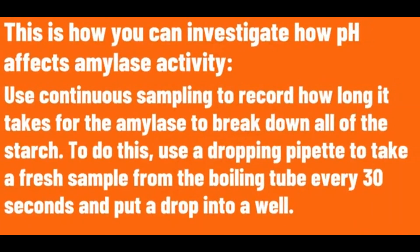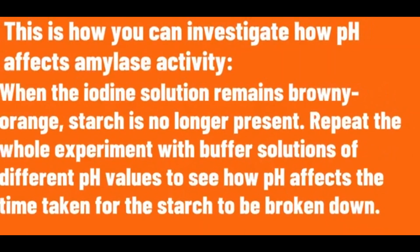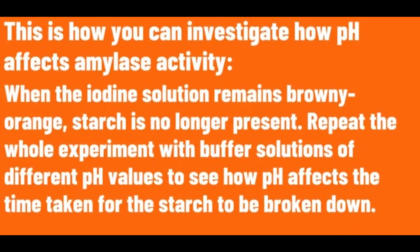Use continuous sampling to record how long it takes for the amylase to break down all of the starch. To do this, use a dropping pipette to take a fresh sample from the boiling tube every 30 seconds and put a drop into a well. When the iodine solution remains browny-orange, starch is no longer present. Repeat the whole experiment with buffer solutions of different pH values to see how pH affects the time taken for the starch to be broken down.